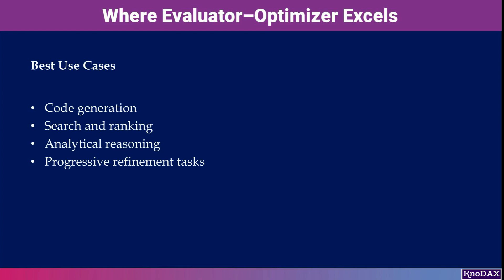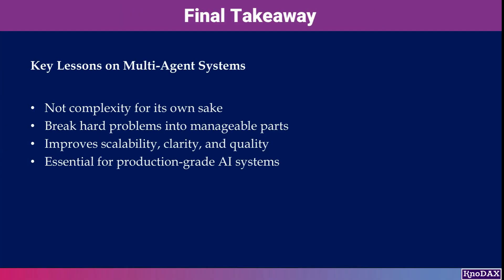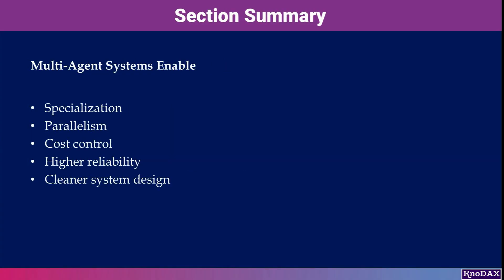Multi-agent systems are not about adding complexity for its own sake — they're about breaking hard problems into manageable, specialized components. When used thoughtfully, multi-agent systems improve scalability, clarity, and output quality. They're a key building block for real-world, production-grade AI systems.